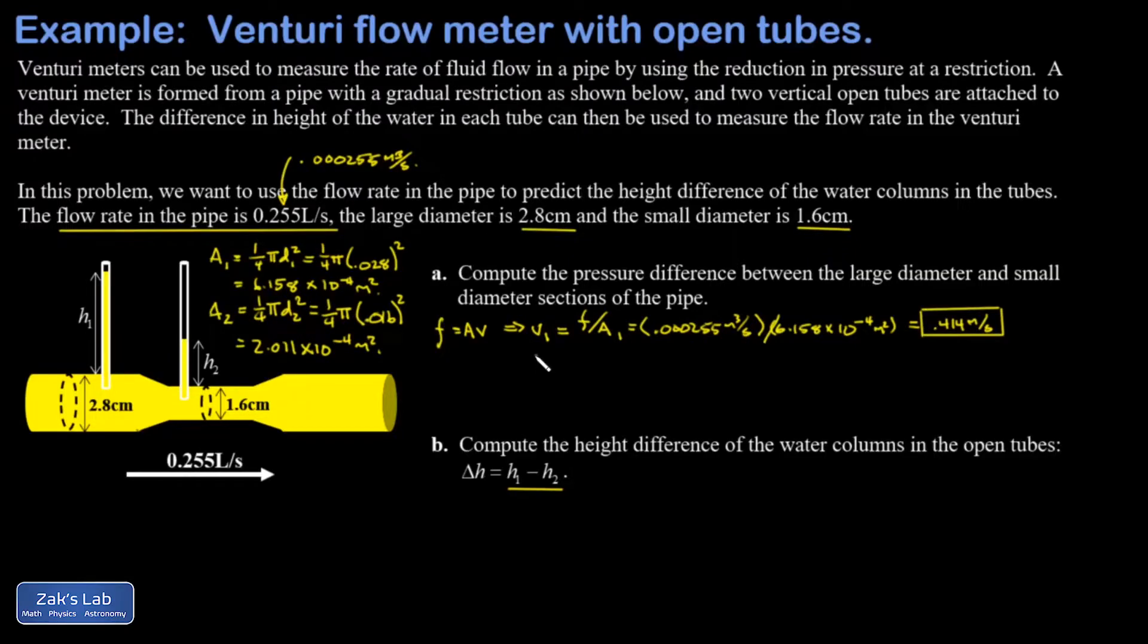We repeat the same calculation for the skinny section: flow rate over A2. In this section I get 1.268 meters per second. Of course it makes sense the fluid is traveling faster in the skinny section. If we're passing the same volume of fluid per second, it must be flowing faster in the narrow part to do that.